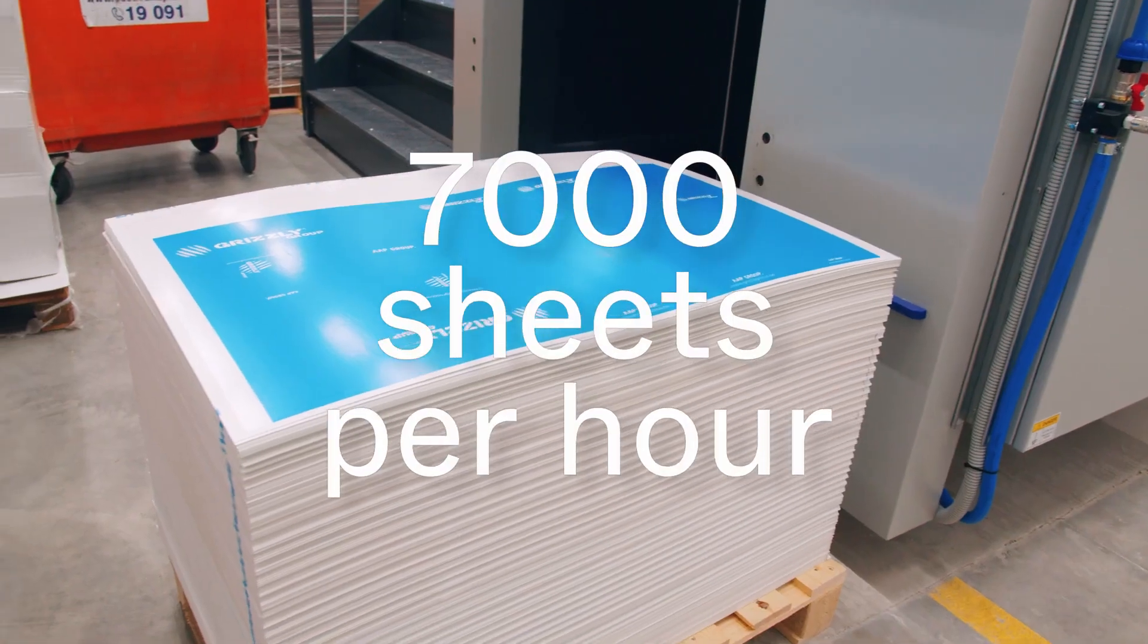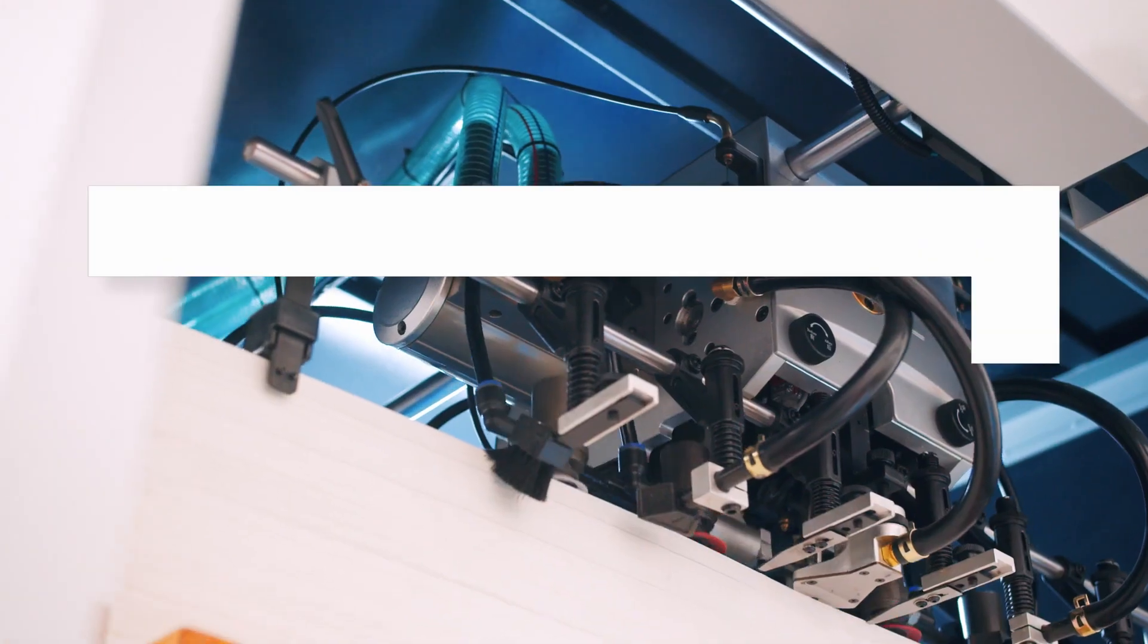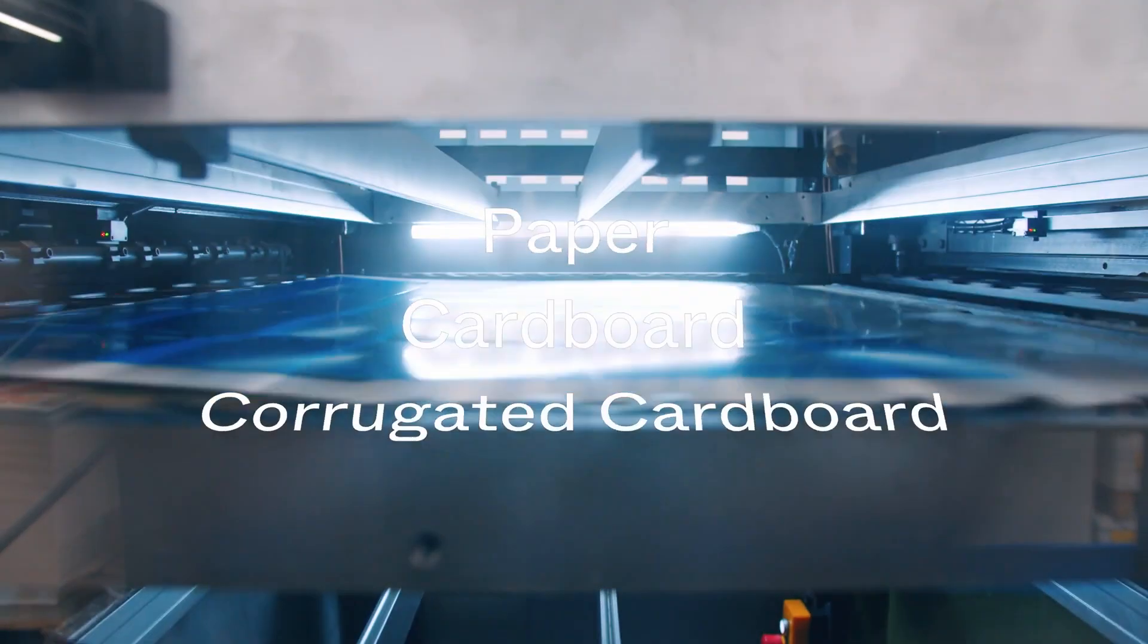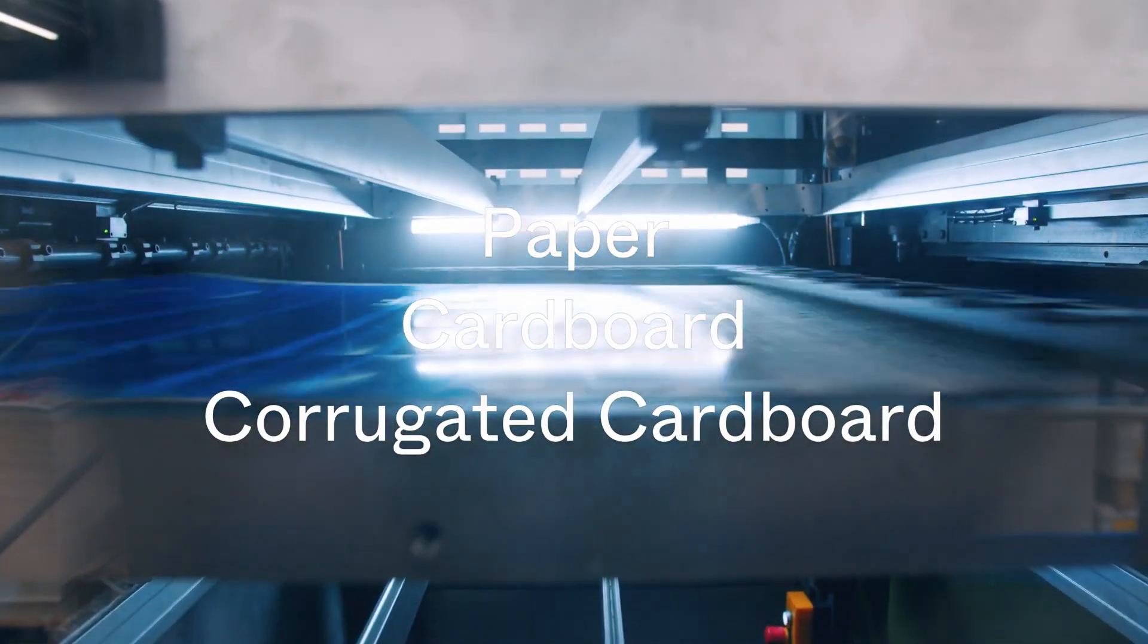The machine runs at full speed 7000 sheets per hour, the maximum sheet size is B1, and we can die cut paper, cardboard, and corrugated cardboard.